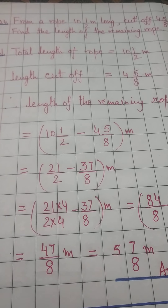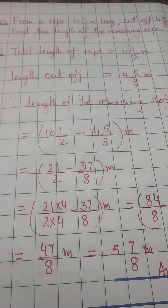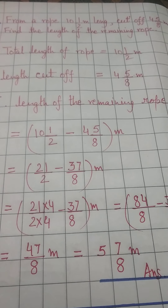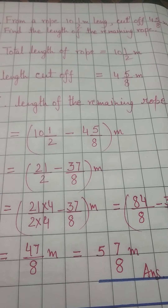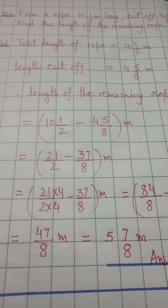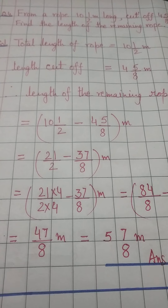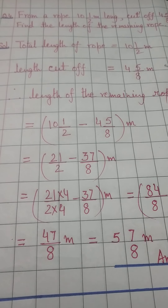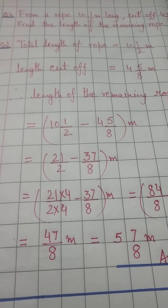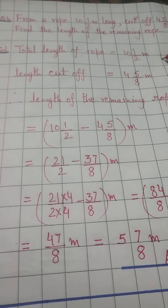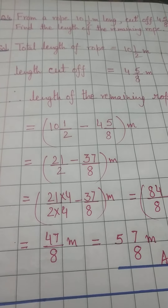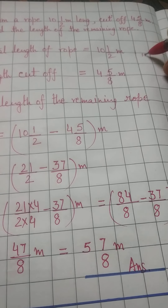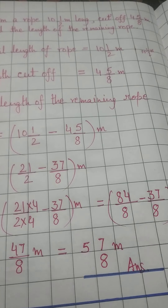There is a rope that is 10 and a half meters long, and we have cut off 4 and 5/8 meters. To find the remaining rope, keywords like 'remaining' and 'left' tell us we need to subtract. So the total length of the rope is 10 and a half meters, and we subtract the length cut off, which is 4 and 5/8 meters.